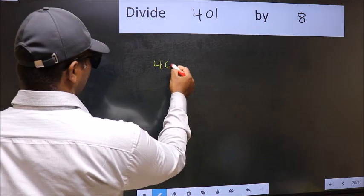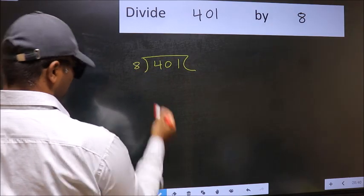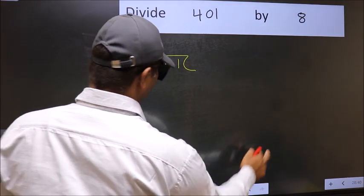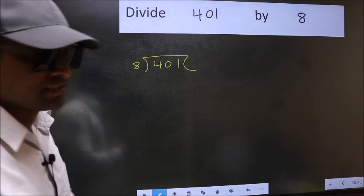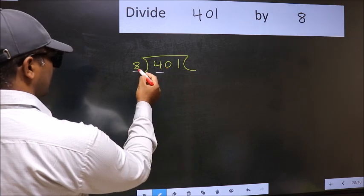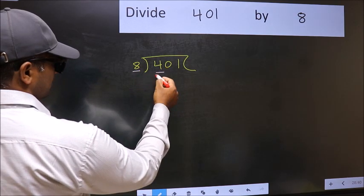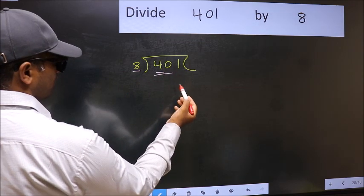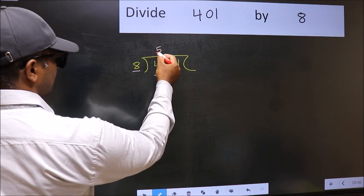401 and 8 here. This is your step 1. Next, here we have 4 and here 8. 4 is smaller than 8, so we should take two numbers, 40. When do we get 40 in 8 table? 8 fives 40.